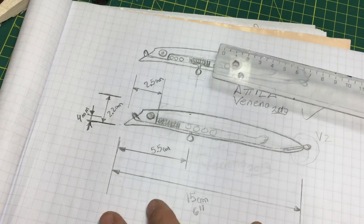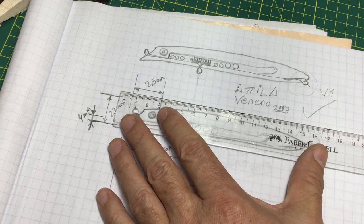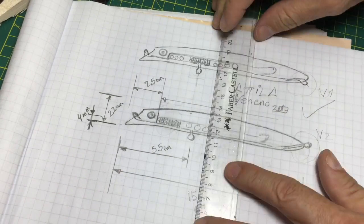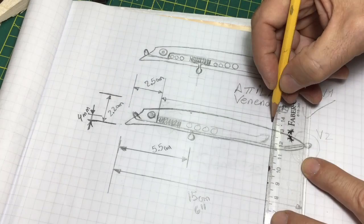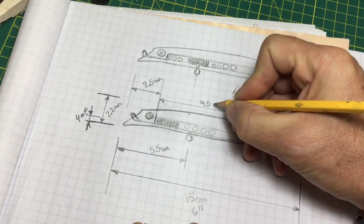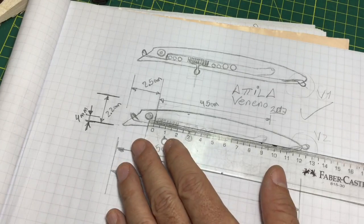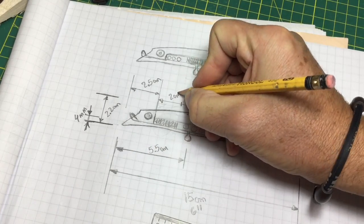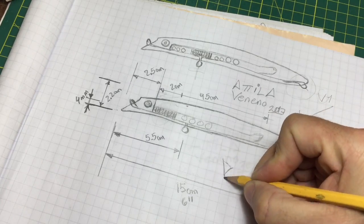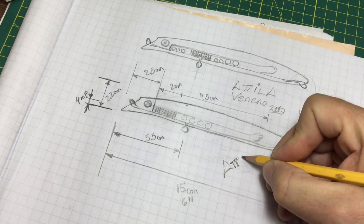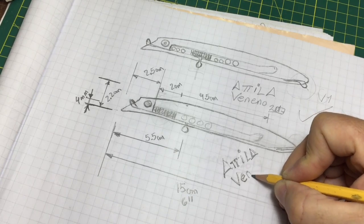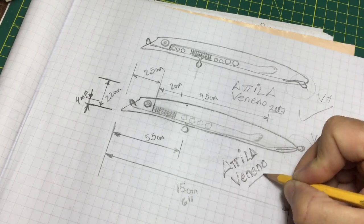What I'm doing now is locating the measure of the channel for the weights. This is a shifting weight system. I am calculating that the lure will weigh around 25 to 27 grams. So now I complete the second step of this project.